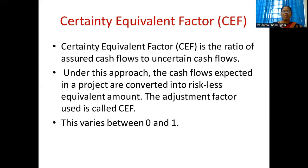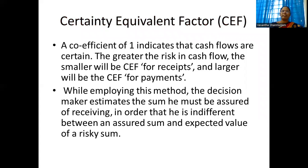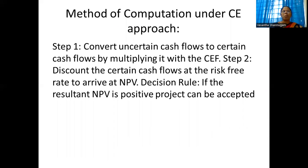Certainty equivalent factor lies between 0 and 1. A coefficient of 1 indicates cash flows are certain. The greater the deviation from 1, the greater the risk in cash flow — the smaller will be the certainty equivalent factor for receipts and larger for payments. The decision maker estimates the sum he must be assured of receiving in order to be indifferent between an assured sum and the expected value of a risky sum.